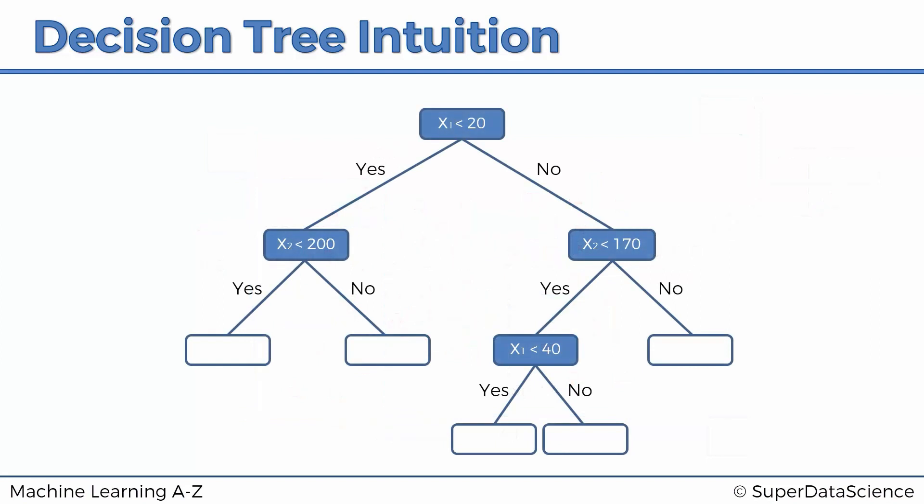And now the last thing we have left to do is to add the values into our decision tree. So basically we just add those values in here. And now whenever we have a new value, what would happen is the algorithm would go through these checks and it would check where it falls and assign the value.